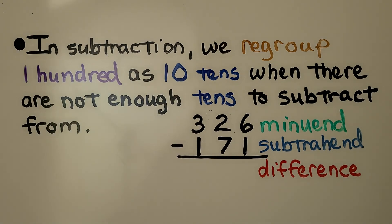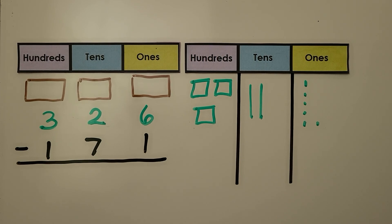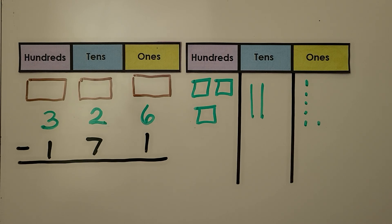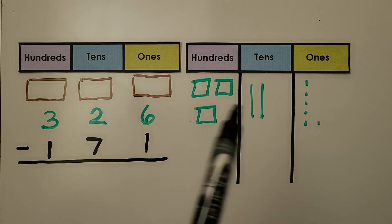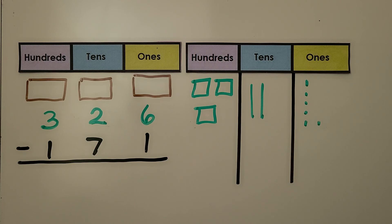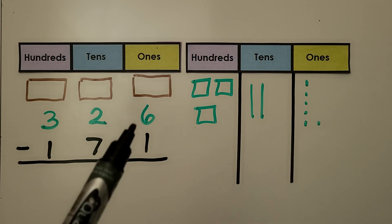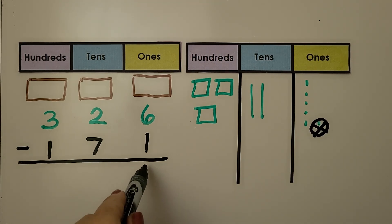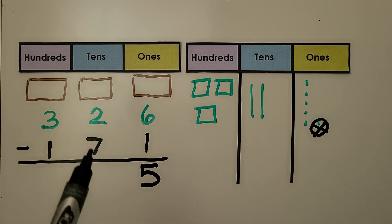We have 326 and we want to subtract 171. We can draw a picture of the minuend: three hundreds, two tens, six ones. We want to take away 171. We have six ones and we want to take away one — we have enough. Six ones take away one leaves five ones. Now we have two tens but we want to take seven away, and we can't because we don't have enough.